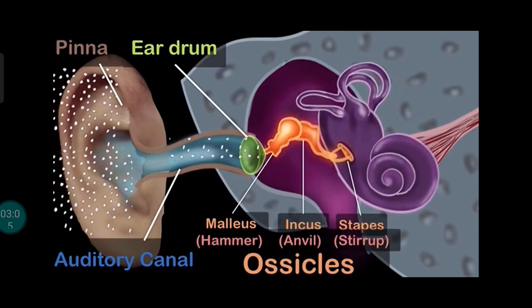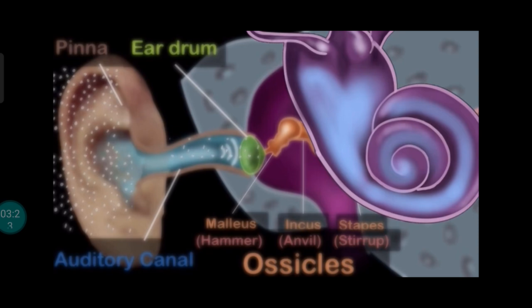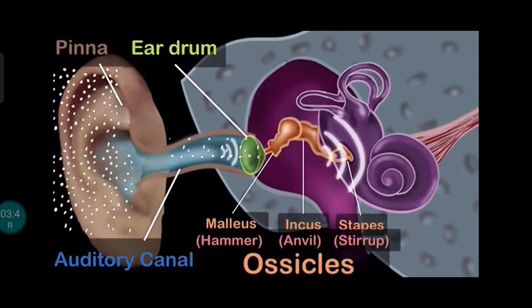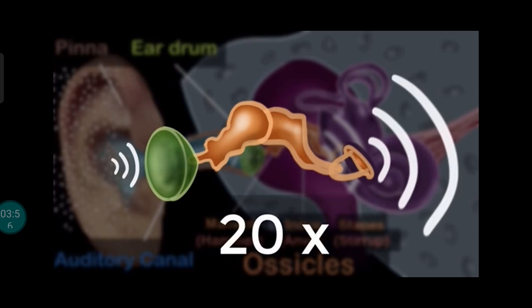Their main job is to increase or amplify the pressure of the sound waves when they reach the inner ear. But why do we need to increase the pressure? Because the inner ear consists of a liquid, not air. So the vibrations must transfer into a liquid, and you might already know that vibrating particles of liquid is much harder than moving particles of air — which is why it's easy to swing your arms in air but pretty difficult to do that in a swimming pool. To set this liquid in vibration, the pressure has to be high enough. It turns out our ossicles increase the pressure of the sound about 20 times.